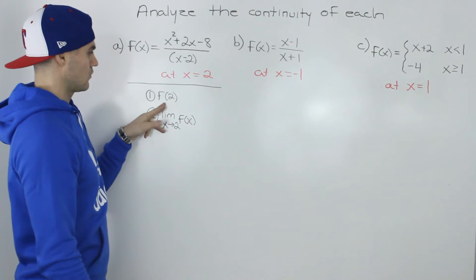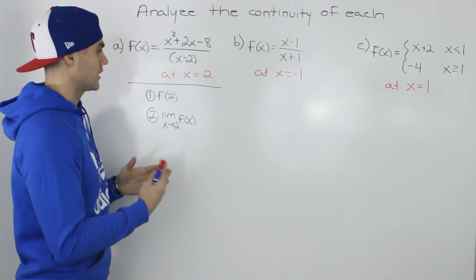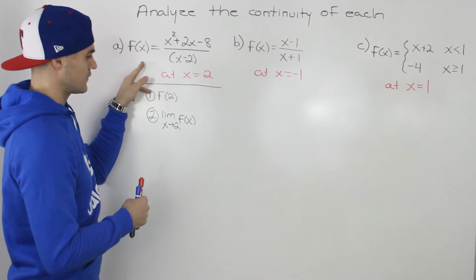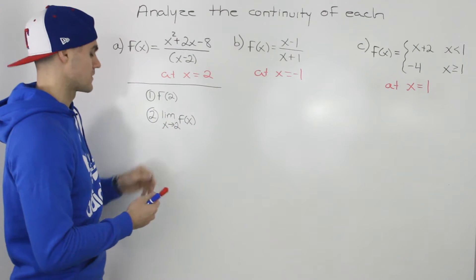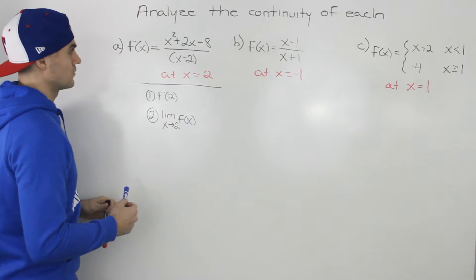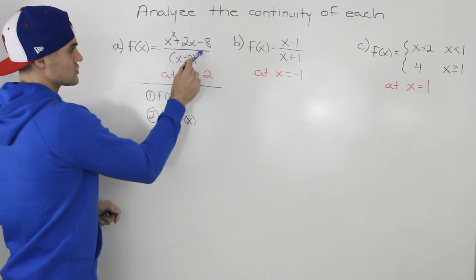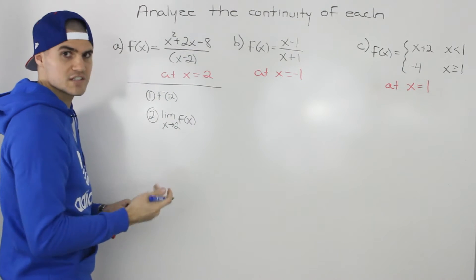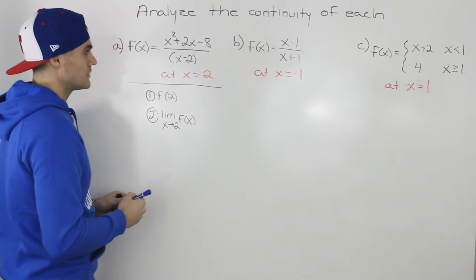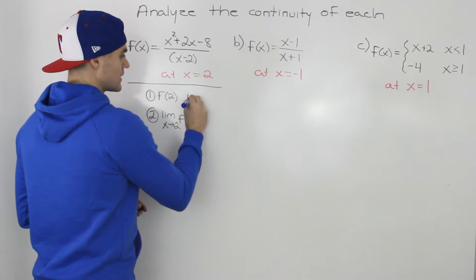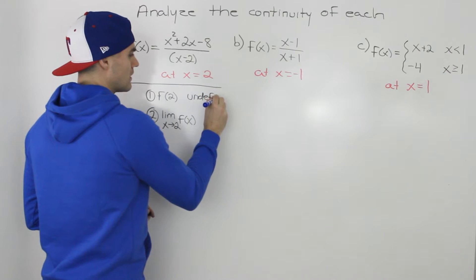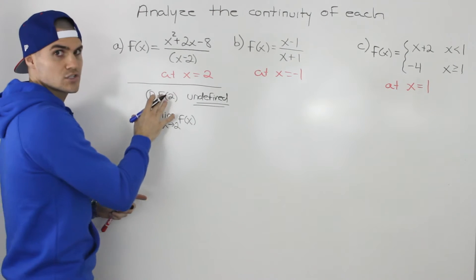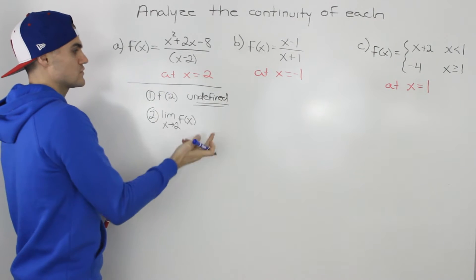The two conditions are: number one, f of 2 is defined; and number two, the limit as x approaches 2 of this function has to equal that f of 2 value. For the first function, f of x equals x squared plus 2x minus 8 all over x minus 2, we check at x equals 2. If we plug in 2, the denominator is 0 — that's undefined. So f of 2 is undefined and we already fail the first condition, meaning this function is not continuous at x equals 2.